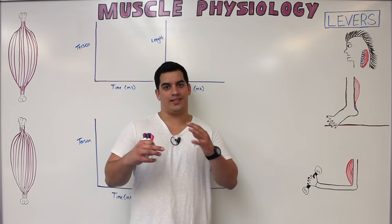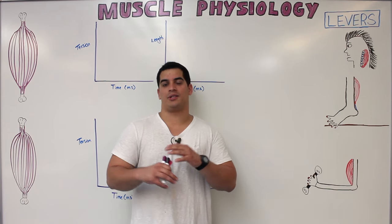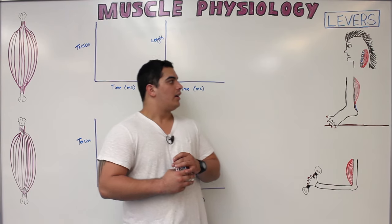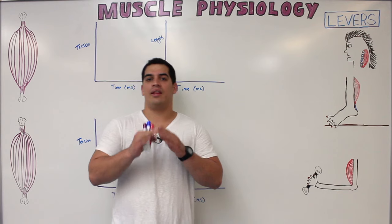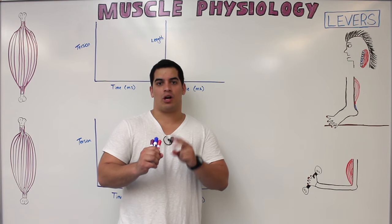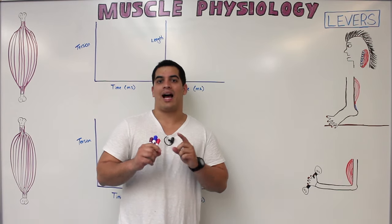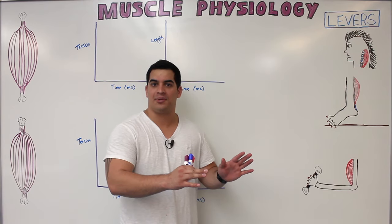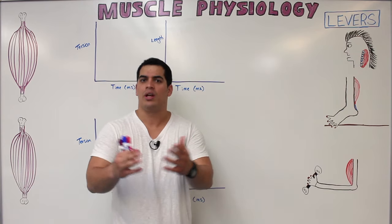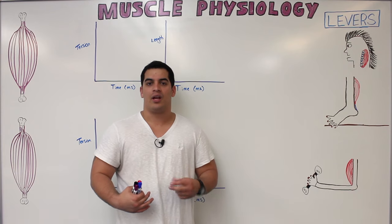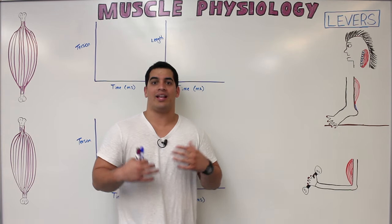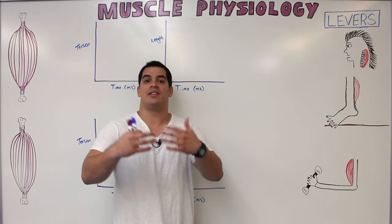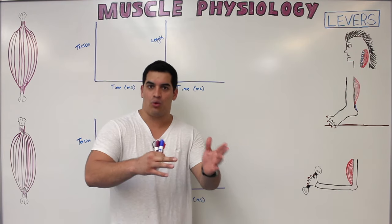In this video we're going to continue on muscle mechanics part three. The main things we'll cover are: first, isometric and isotonic contractions and how they're graphically represented with physiological and anatomical examples; and second, the three classes of levers, their examples in the body, and their mechanical advantage and disadvantage.